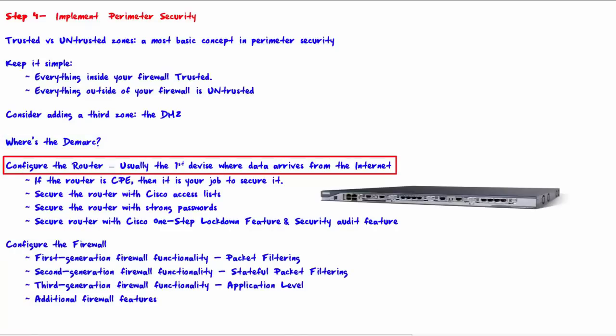Configure the router — usually the first device where data arrives from the internet. If the router is CPE, then it is your job to secure it. Securing the router is most often done by using access lists or ACLs.